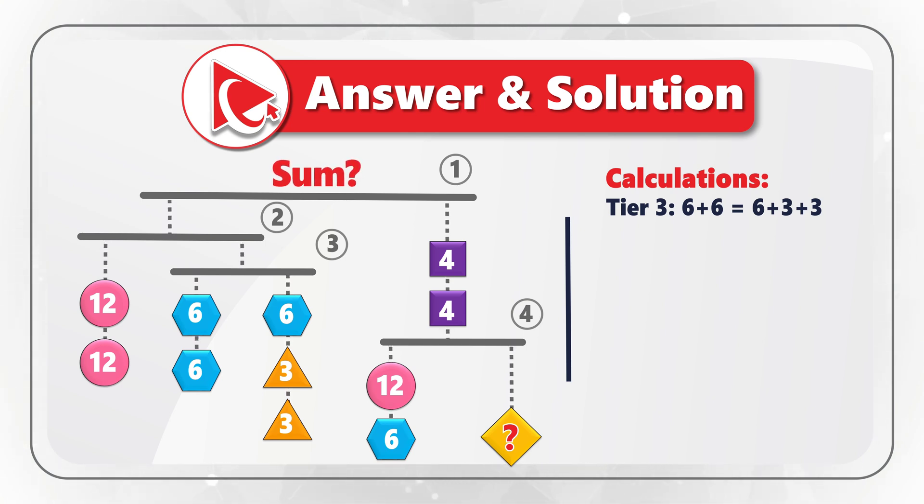So on the left of tier 3, we have two hexagons with total value of 12. On the right of tier 3, we have hexagon, which equals number 6, plus two triangles, 3 plus 3. So on both sides, the total value is 12. This is why tier 3 remains in balance.